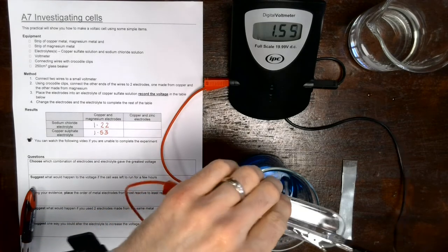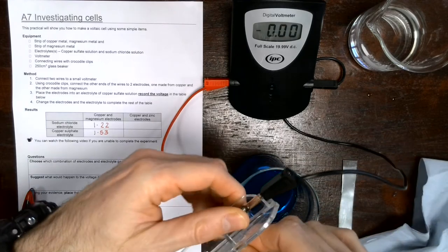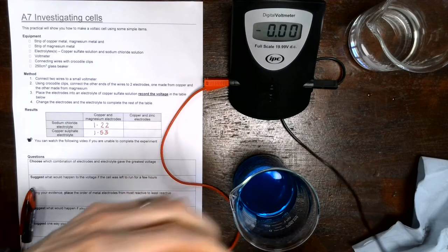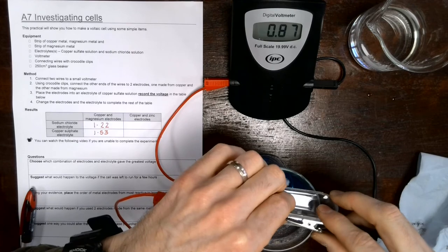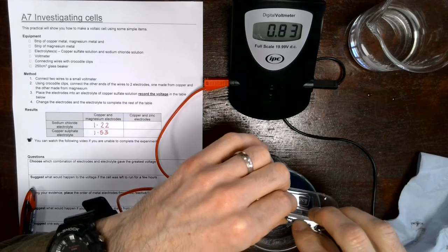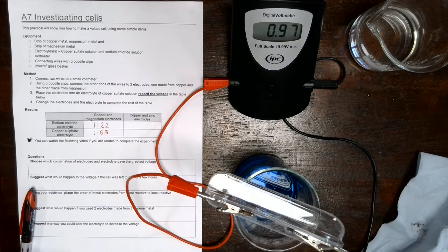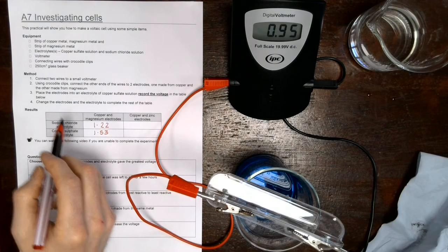Now we need to swap and change the electrodes. We're going to be using copper still, but we're going to swap the magnesium for zinc, so the zinc electrode can now be connected up. Let's go back to, we'll stay with the copper sulfate while we're here. Let's just move this down ever so slightly so they actually go into the electrolyte.